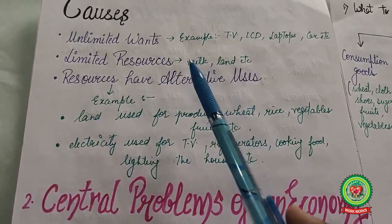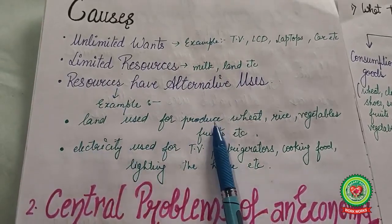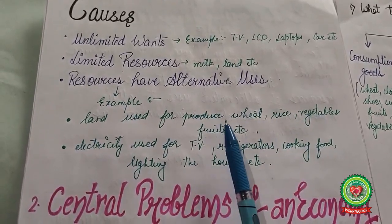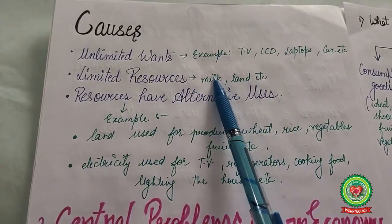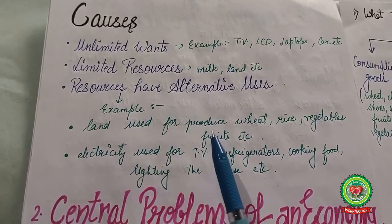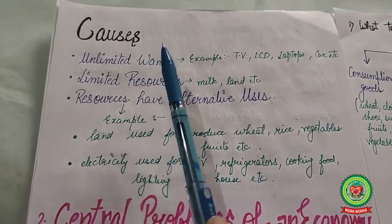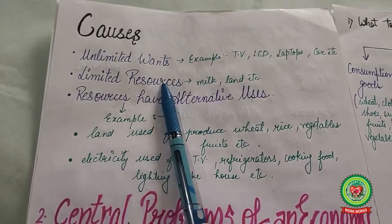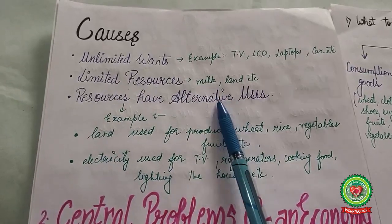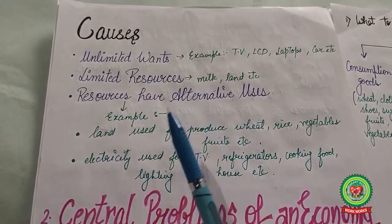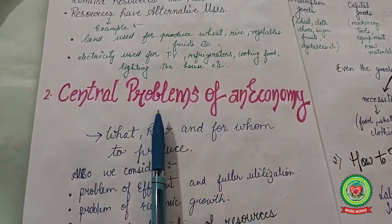Third cause is that resources have alternative uses. Land can be used for wheat, rice, vegetables, or fruits. Electricity can be used for TV, refrigerators, cooking, or lighting. Milk can be used for producing butter, cream, or cheese. Wants are unlimited but milk is a limited resource that can be used for drinking or for further production. These causes give rise to the economic problem.